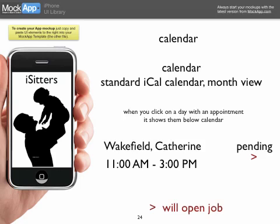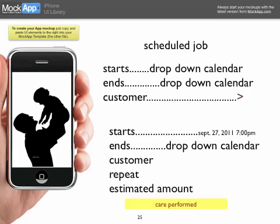Under the calendar — it would be just like iCal. If you have something scheduled on September 27th, there will be a little black dot on that date. If you click on it, the job details come up, and then you hit an arrow to open up the full job.